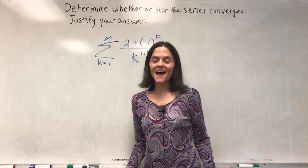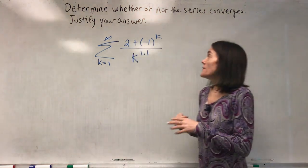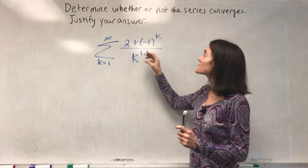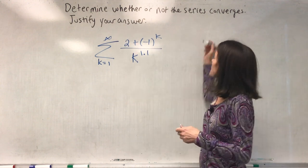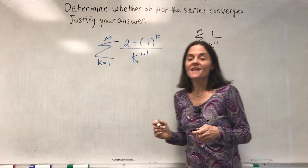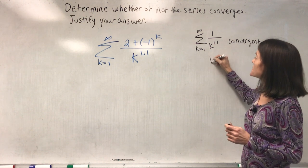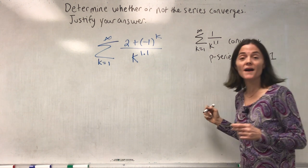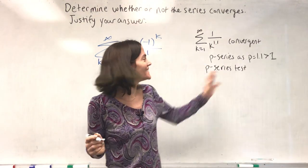This example looks almost like the last one, except our conclusion will be a little different. The numerator is either three or one — three when k is even, one when k is odd. This series looks like one over k to the 1.1. We consider the sum from one to infinity of one over k to the 1.1. This is a convergent p-series, as p is 1.1, which is strictly bigger than one.